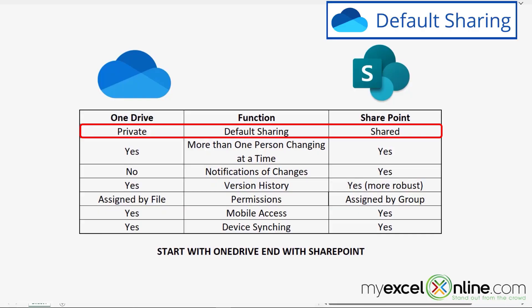The first task is: what is your default sharing mode? With OneDrive, your default sharing mode is private. Whereas with SharePoint, your default sharing mode is shared. When I upload a file to OneDrive, by default it is just my file — not shared with anyone else. I can share it with others, but in the initial upload process, it's just me. I can open it and use it from different devices, and no one else can access it unless I specifically assign those permissions.